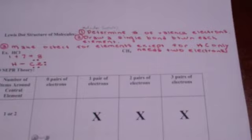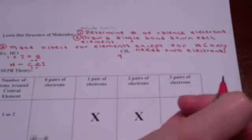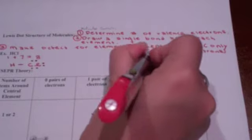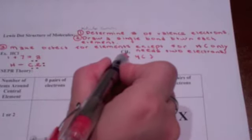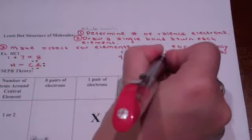Let's look at CH4. Carbon has four valence electrons, plus there are four hydrogens. Hydrogen has one valence electron each, so four times one. So there are a total of eight valence electrons again. Step one is done.